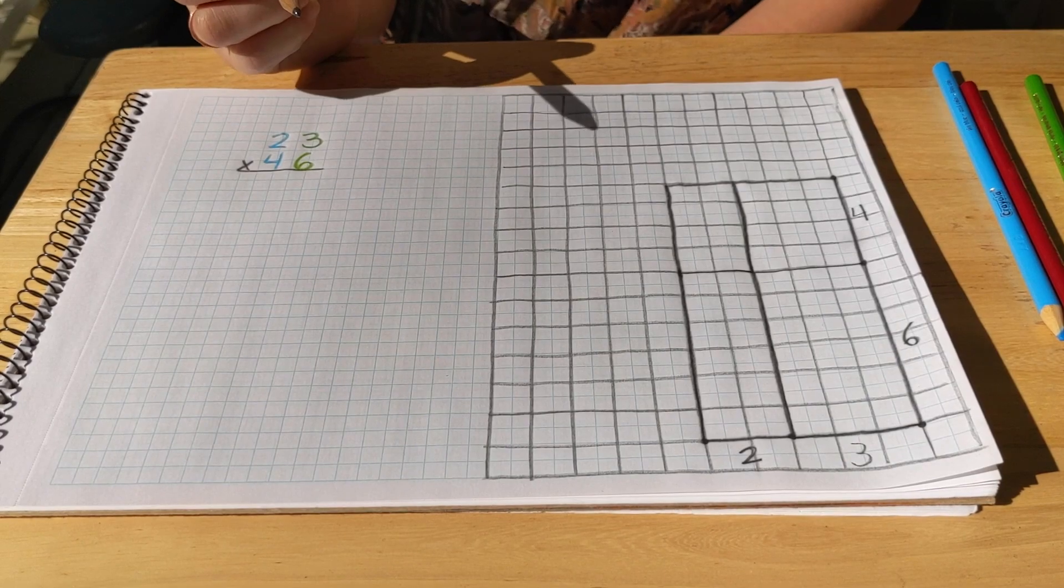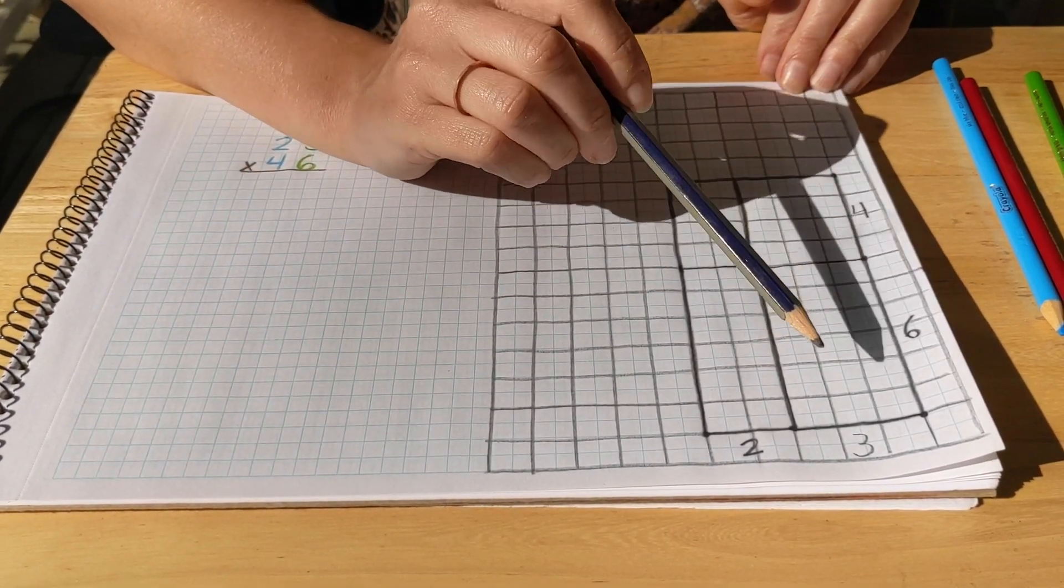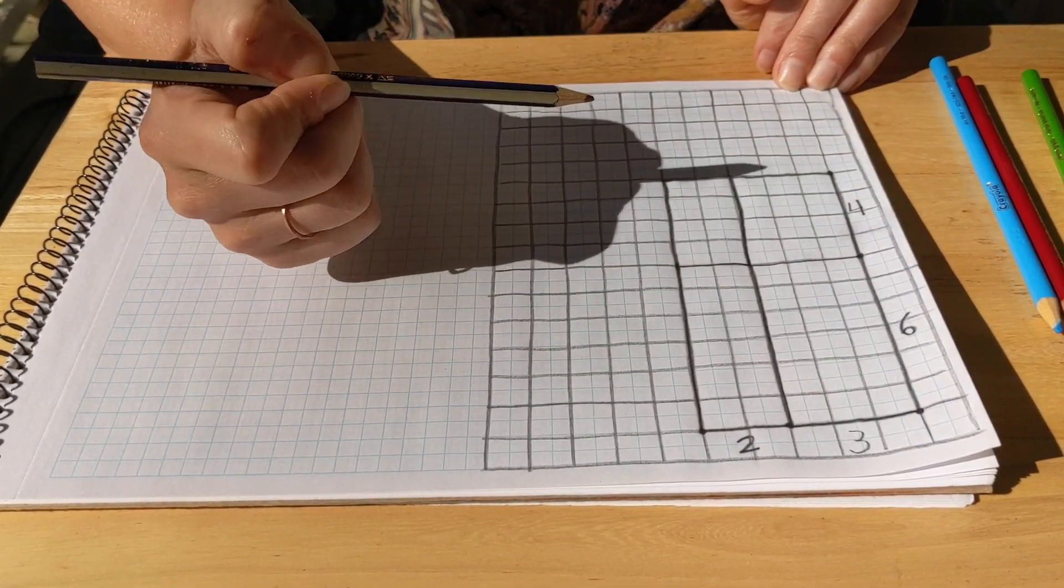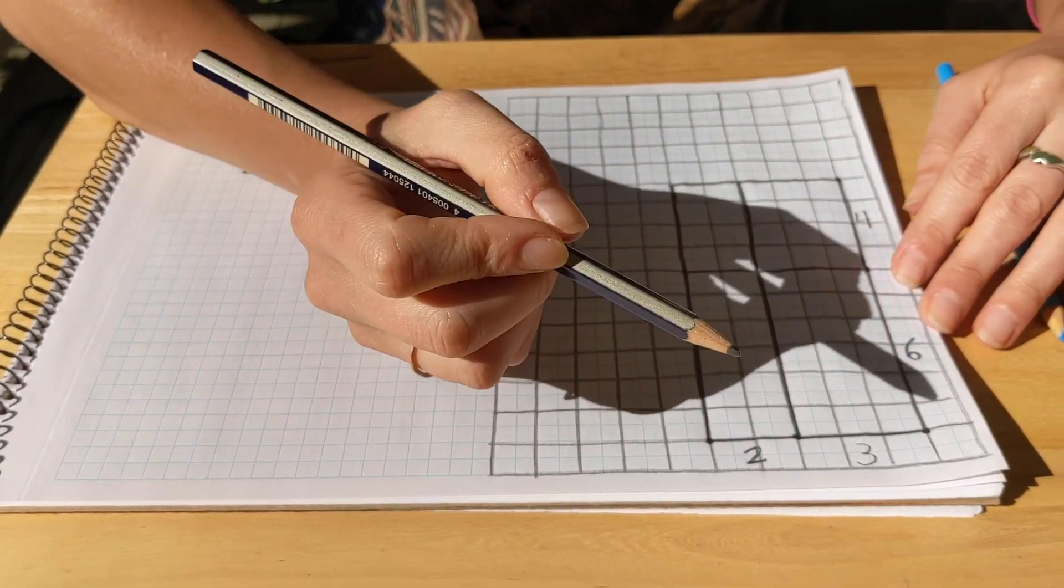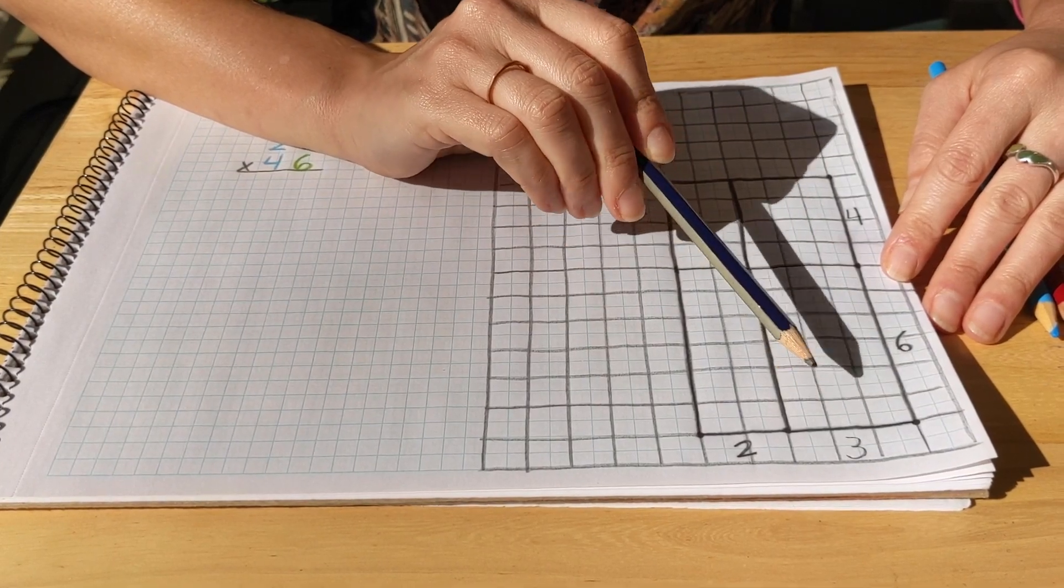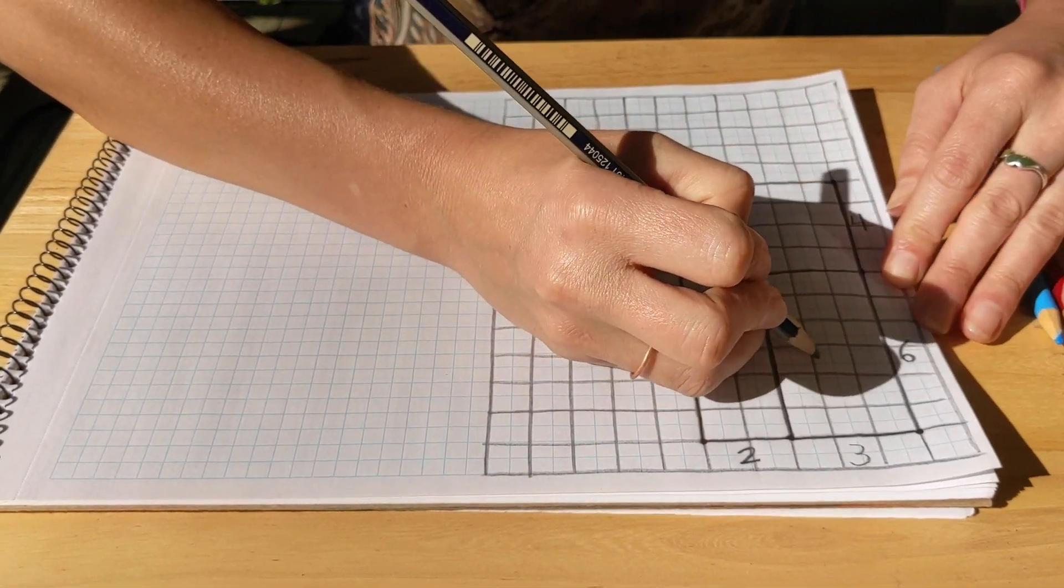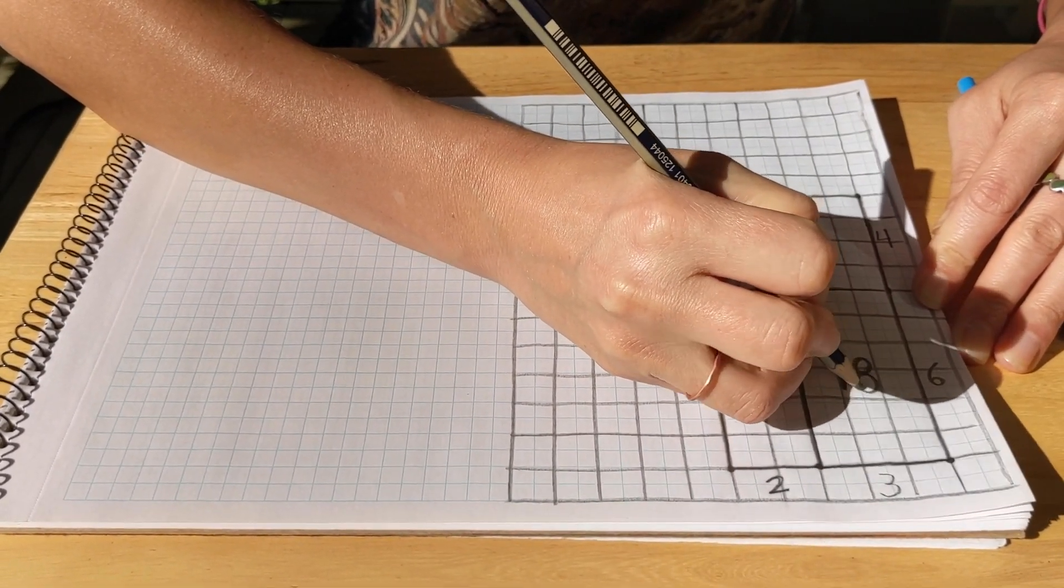So now we've drawn it out. Now we have to do the multiplication. We're going to first multiply units times units. Three times six is 18. So if you don't know that math fact, you can always count the number of squares in here. You'll find that there are 18, right?